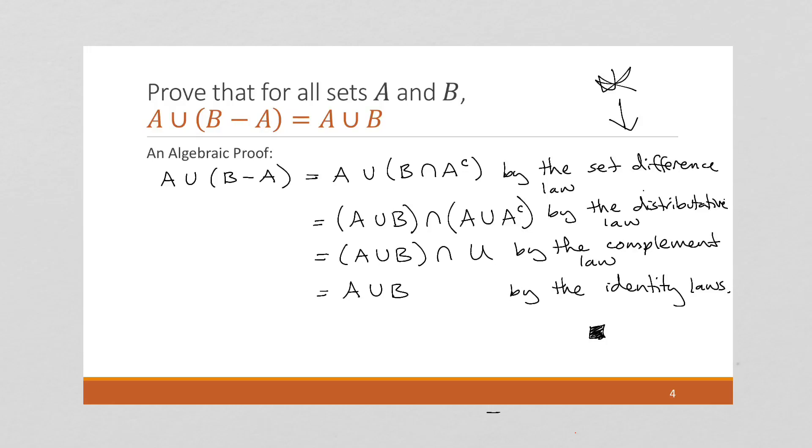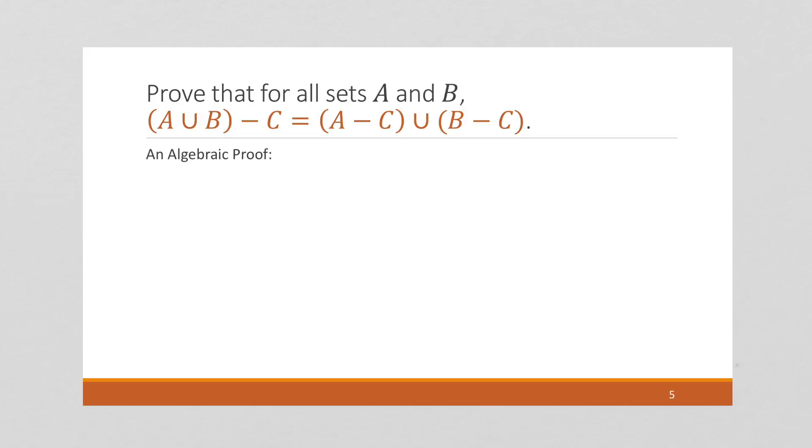Now we're going to do another example. So here's another example, I want to do an algebraic proof. Once again, I cannot start with my equality. I can pick either side to work with, doesn't really matter. I'm going to stick with (A union B) minus C for no particularly good reason.